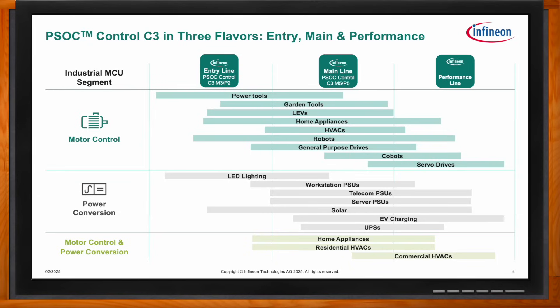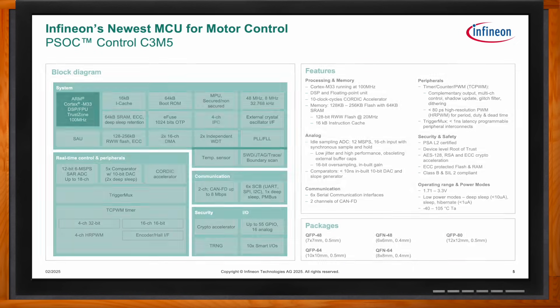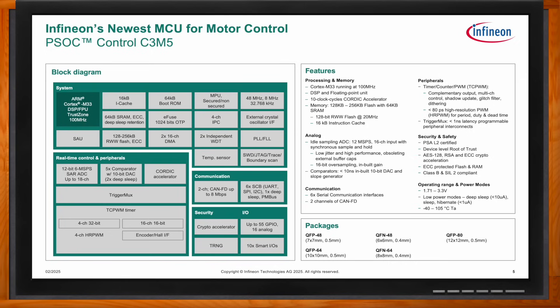Looking at the mainline product, it is equipped with a high-performance, low-power 32-bit ARM Cortex-M33 core with digital signal processor, floating point unit, and CORDIC accelerator. The core has access to 16 kilobytes of low-latency instruction cache, 64 kilobytes of SRAM with deep sleep retention, and up to 256 kilobytes of read-while-write flash. SRAM and flash are ECC protected, and memory is protected with both security attribute and memory protection units.